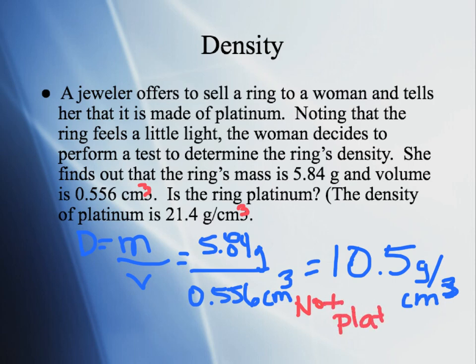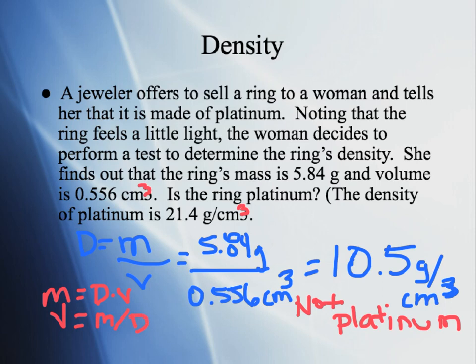We can also rearrange the density formula to solve for other variables. Mass equals density times volume. Volume equals mass divided by density. You'll have all kinds of practice problems requiring you to solve for the different variables within this formula.